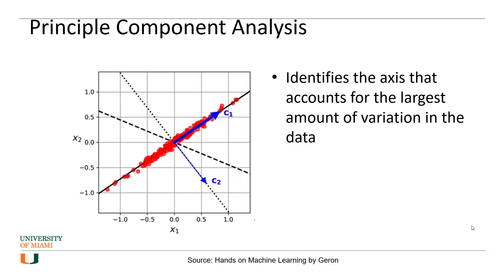Principal component analysis is an approach to reduce the number of dimensions. It works by identifying the axis that accounts for the largest amount of variation in the data. In this example from Hands-On Machine Learning, we have a two-dimensional data set with features X1 and X2. If I implement PCA, it will find a new axis called C1 which explains a very large variation in the data set. By projecting each observation onto the C1 axis, I can describe a very large variation with only one component rather than the original two features X1 and X2.